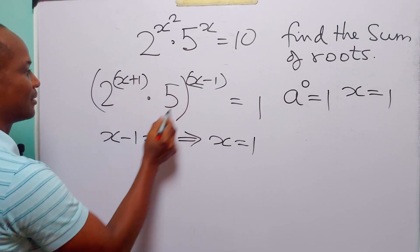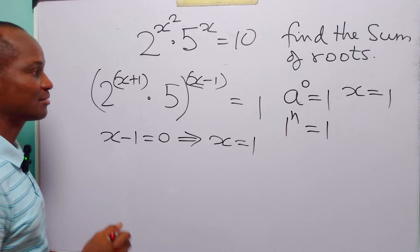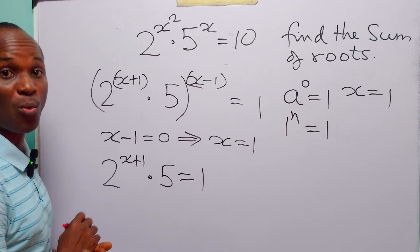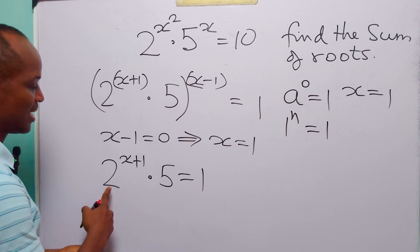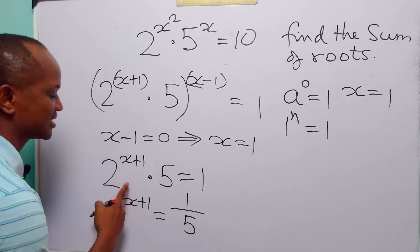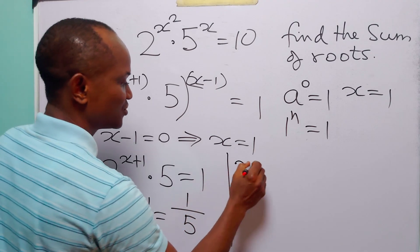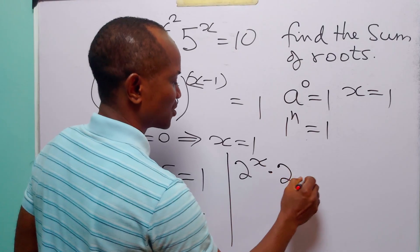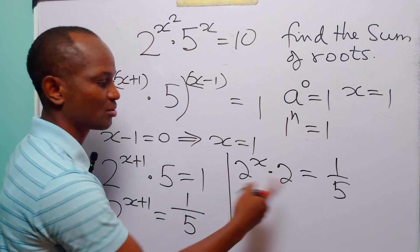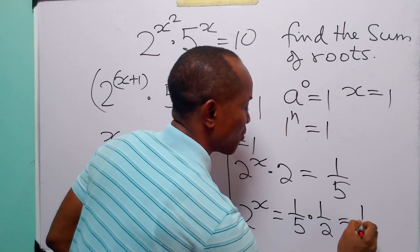We also have to remember that 1 raised to any power is equal to 1, that is 1 to the power n is equal to 1. So that means that 2 to the power x plus 1 multiplied by 5 must be equal to 1 for this equation to be satisfied. From here, we have that 2 to the power x plus 1 is equal to 1 over 5. Remember that the left-hand side can be written as 2 to the power x multiplied by 2 to the power 1, which is 2. And this is equal to 1 over 5. When we divide both sides of this equation by 2, we have that 2 to the power x is equal to 1 over 5 times 1 over 2, which is equal to 1 over 10.